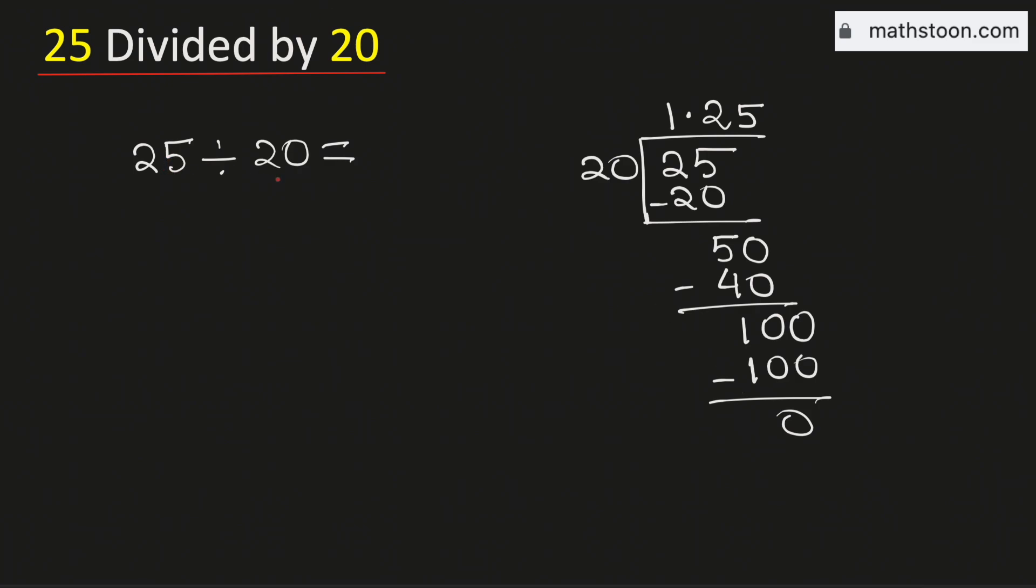Therefore 25 divided by 20 is equal to 1.25 and this is our final answer.